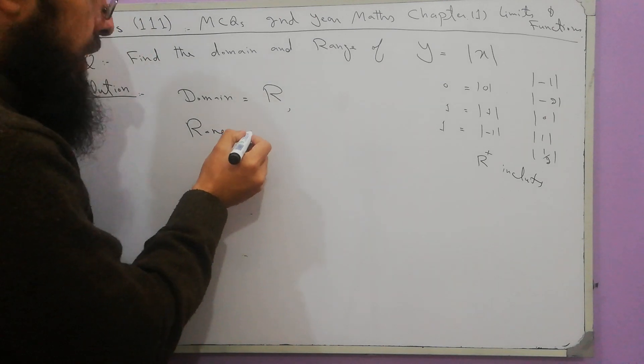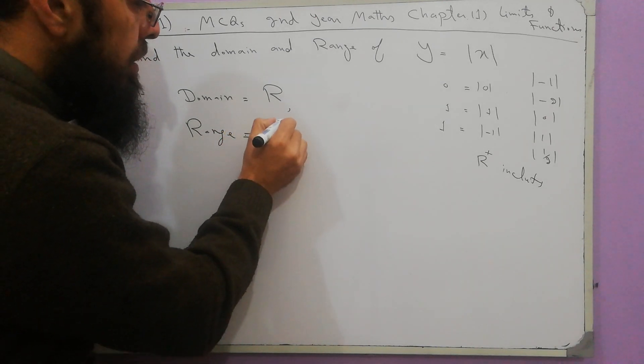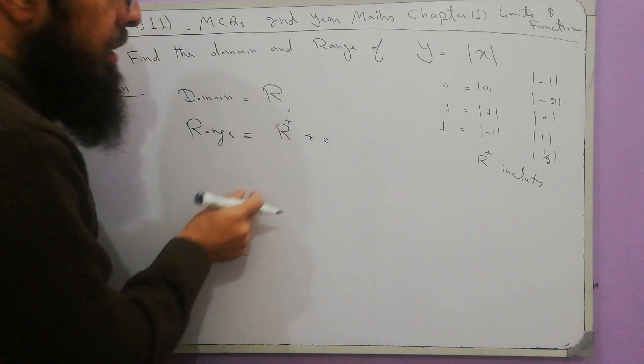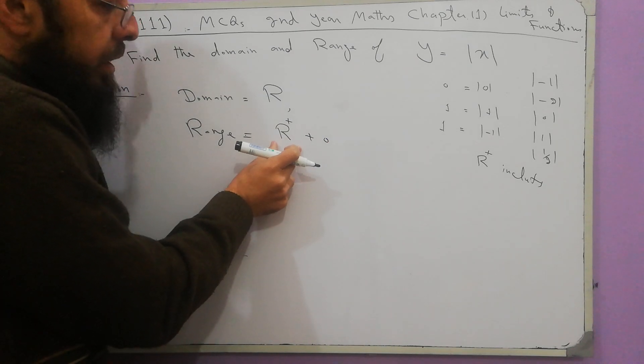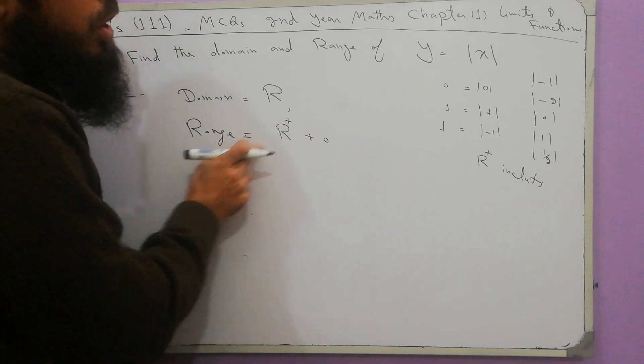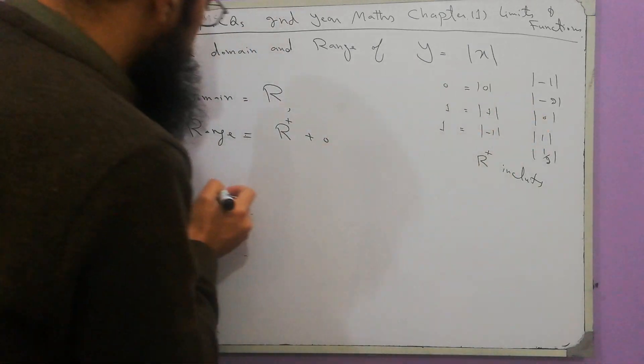Range is all positive real numbers plus 0. All positive real numbers and 0 are in range. In range, there are no negative real numbers.